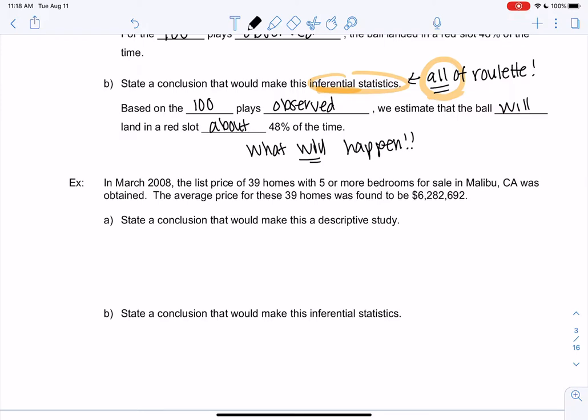So we take a sample of 39 homes, so that's my sample, with five or more bedrooms in Malibu. And then we found the average price was $6,282,692. Malibu is very expensive. And five bedrooms is huge.